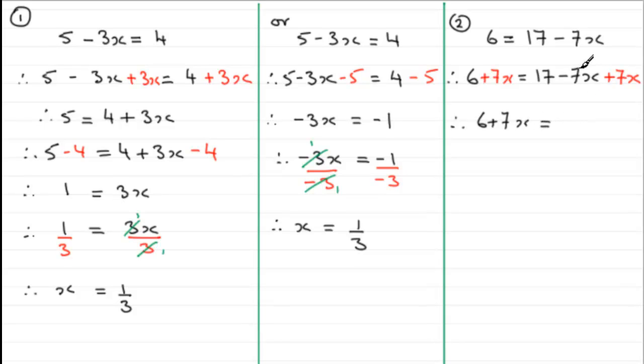So what have we got? Well we've therefore got 6 plus 7x on the left hand side, and on the right hand side minus 7x plus 7x is 0x or just simply 0, so we've got left with 17.